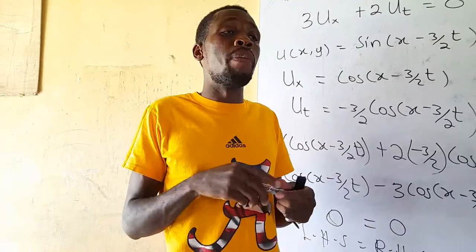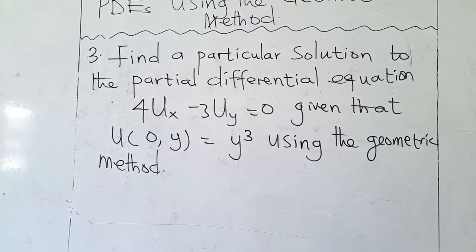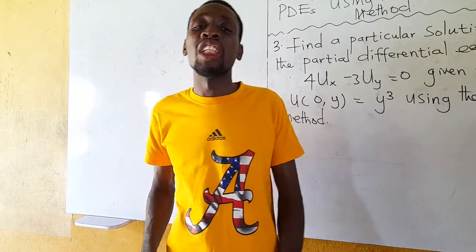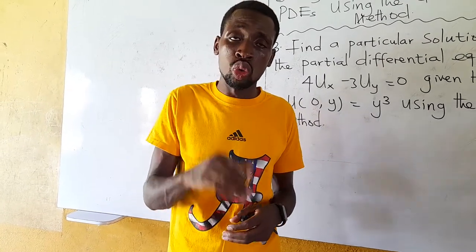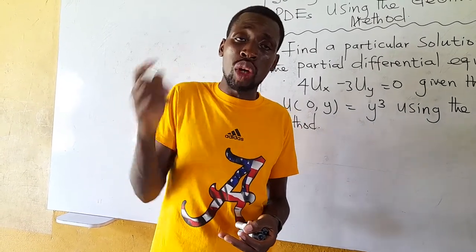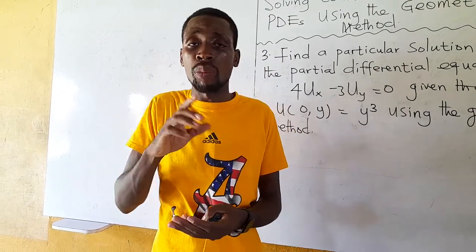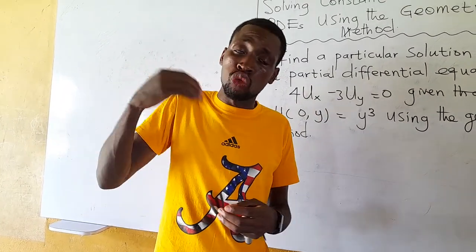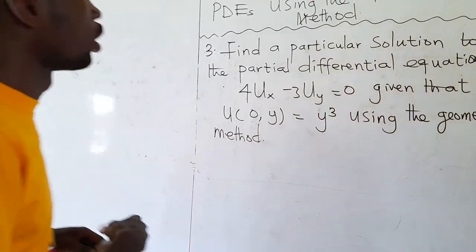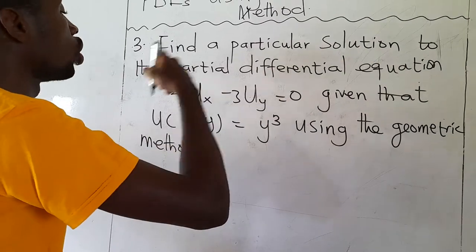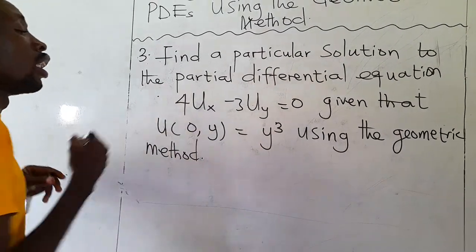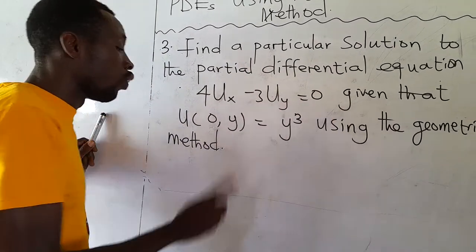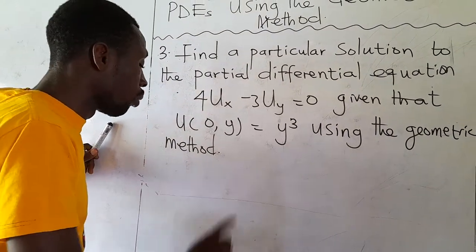We will solve another example so that we are fully familiar with the method. Before we solve our third question, please remember to subscribe to the YouTube channel and click the notification bell so that you will be the first to receive new videos. Note that the verification step is not part of the solution — it is just a sidebar for you to confirm that what you have done is correct. Let's find a particular solution to the PDE: 4 times ∂U/∂x minus 3 times ∂U/∂y equals 0, given that U(0, y) equals y squared, using the geometric method.